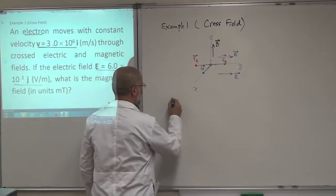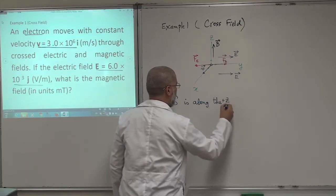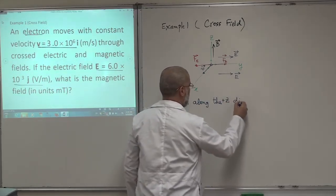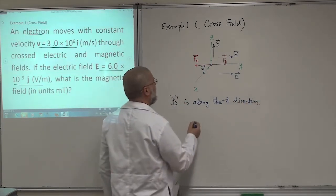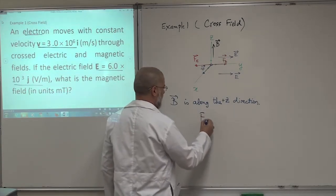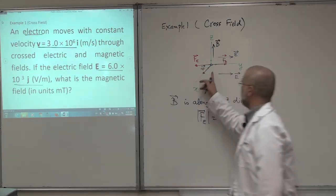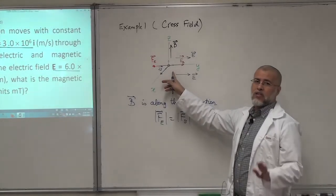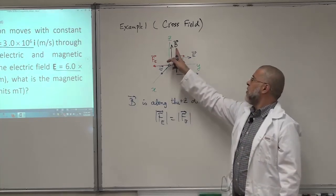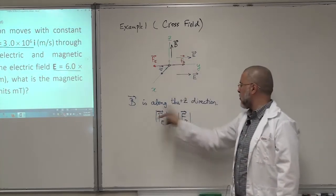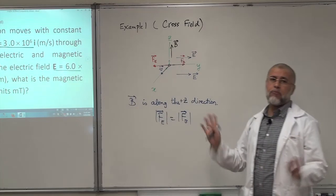So the vector B is along the positive Z direction. That's important. This is very important to understand this figure here. You can stop the video and repeat to see how I was able to find the direction of B. B is along the positive Z direction. If it was the proton, things will be completely different.